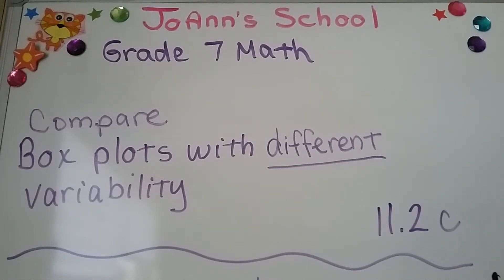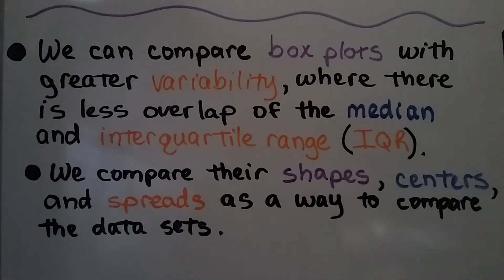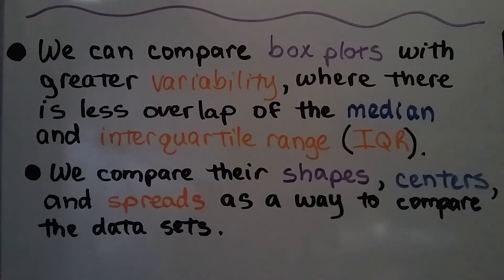Compare Box Plots with Different Variability, 11.2C. You can check the information card or the description for 11.2A and B. We can compare box plots with greater variability, where there is less overlap of the median and interquartile range, the IQR. We compare their shapes, centers, and spreads as a way to compare the datasets.